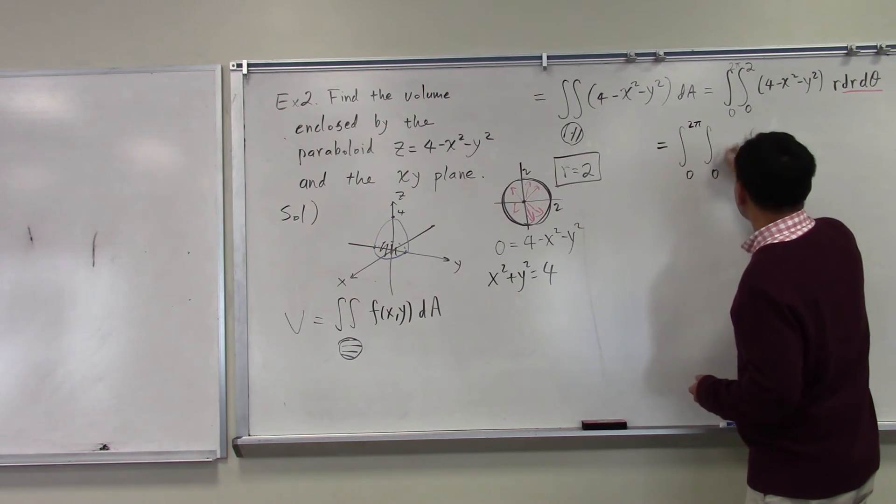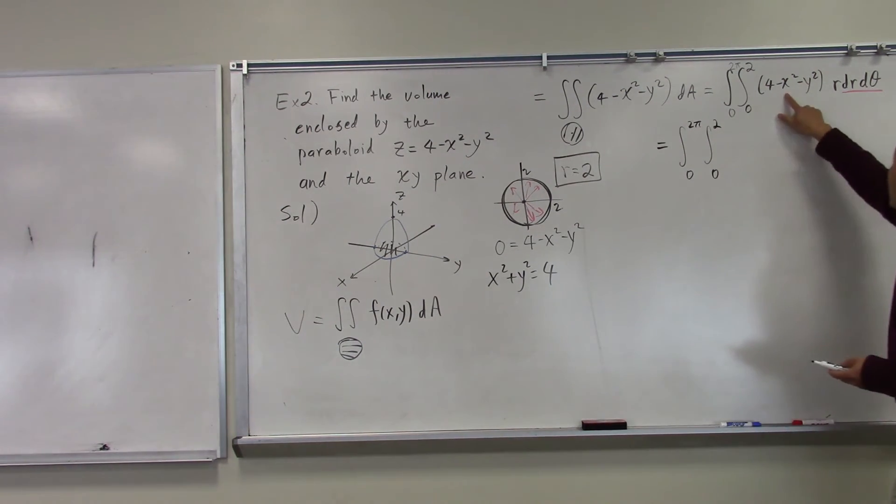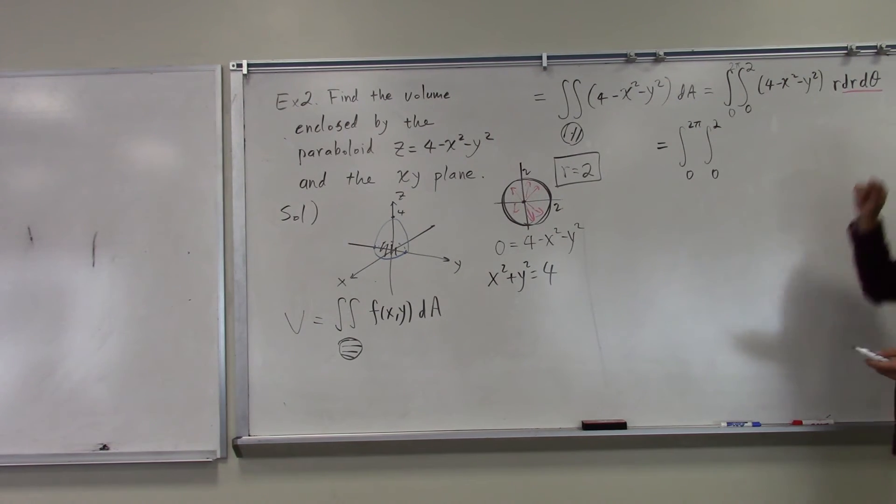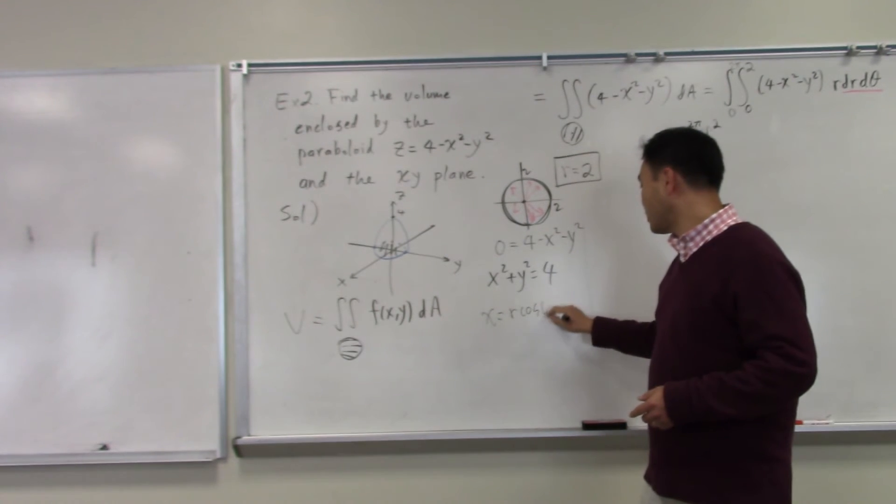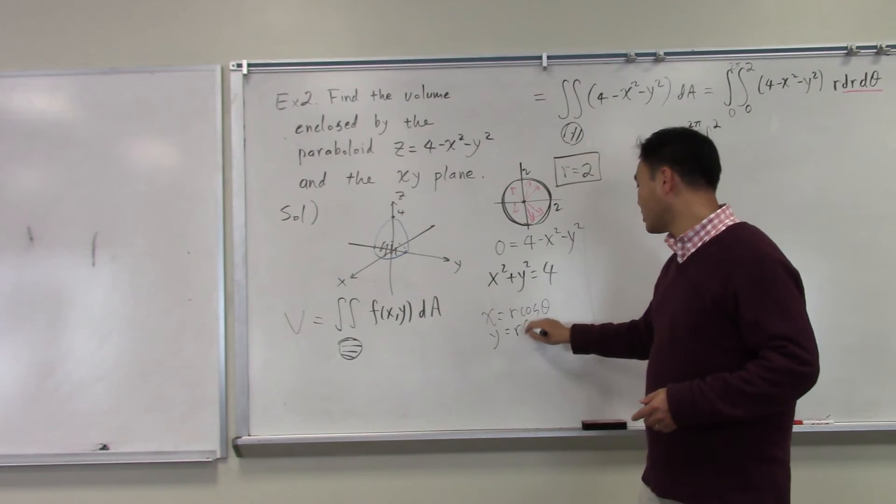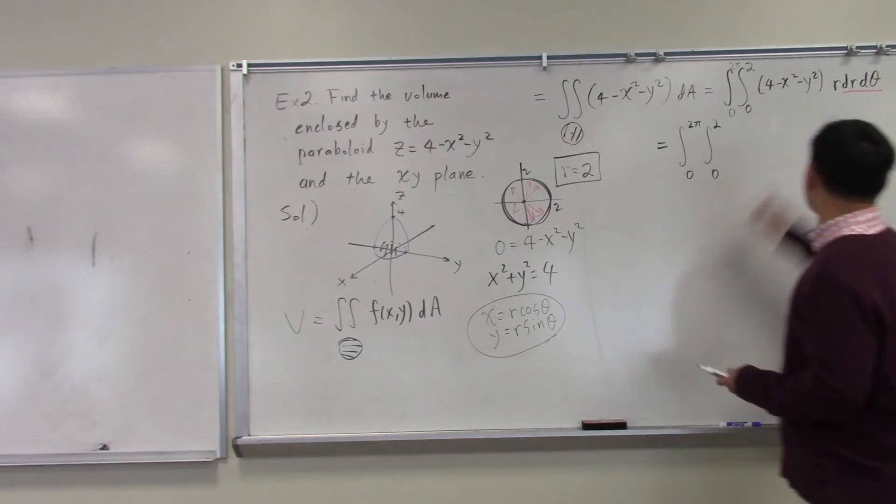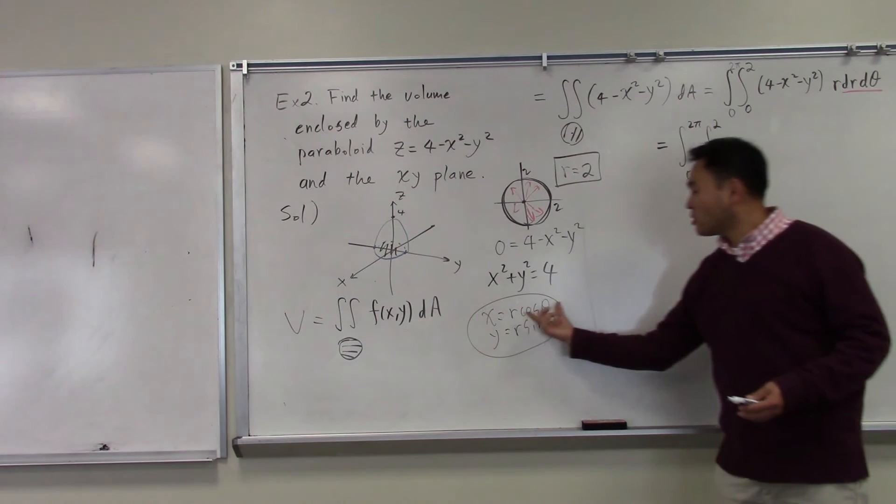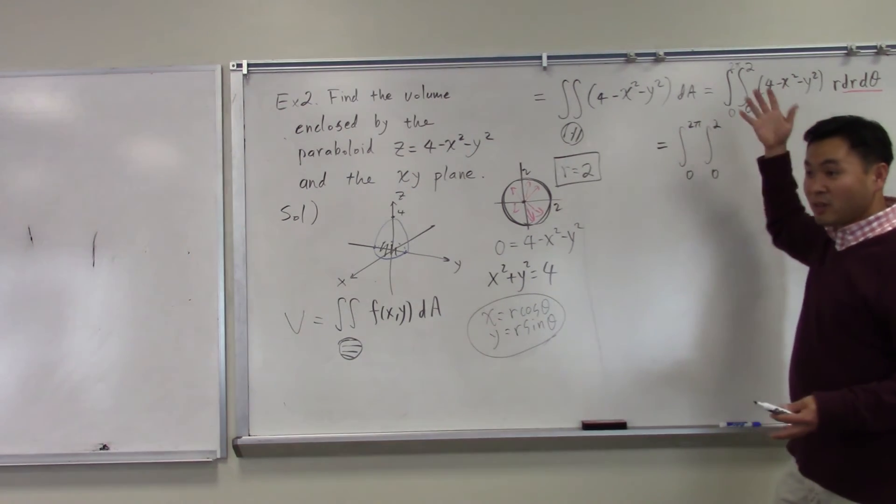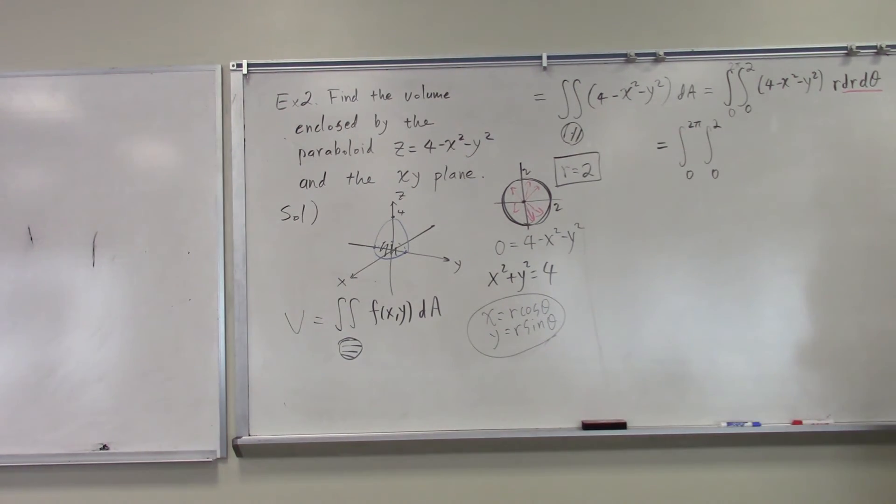Now, we have a slight problem here because x and y are functions of R and theta. You remember that x is equal to R cosine theta and y is equal to R sine theta. So they do change as R and theta change, but unless we put x and y exactly as functions of R and theta, we can't compute this.